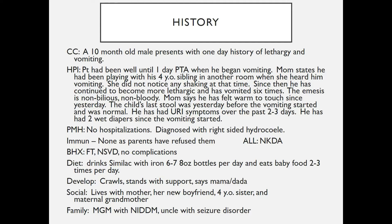Mom says he has felt warm to touch since yesterday. The child's last stool was yesterday before the vomiting started and was normal. He has had upper respiratory symptoms for the past two to three days and he has had two wet diapers since the vomiting started. Past medical history includes no hospitalizations but he was diagnosed with a right-sided hydrocele at birth. Immunizations are not up to date since parents have refused to get any of the vaccines. He has no known drug allergies. Birth history: he was full term NSVD with no complications. He drinks Similac with iron, taking about six to seven eight-ounce bottles per day and eats baby food two to three times per day.